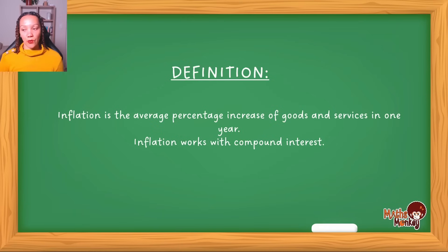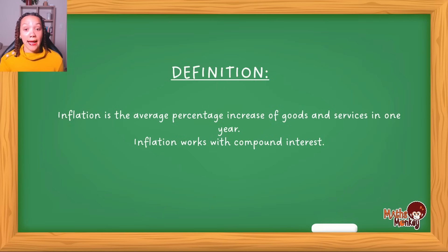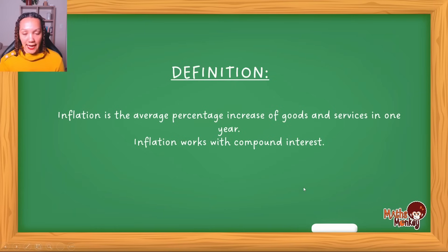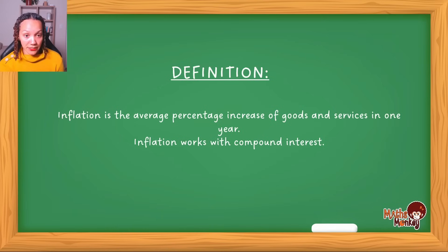Inflation also refers to the weakening of a currency. In other words, if inflation goes up and the prices of things go up, then the value of your money comes down. So the value of a 100 Rand note last year is going to be less than the value of the 100 Rand note this year because everything is more expensive. Inflation works on the compound interest concept, so I'd suggest going over the video where I look at simple interest and compound interest in detail.